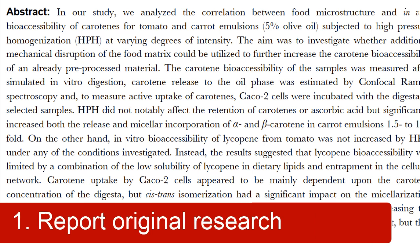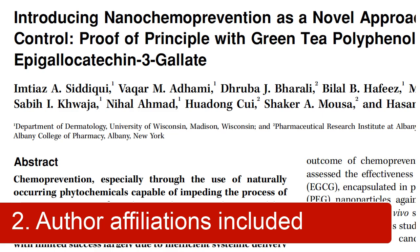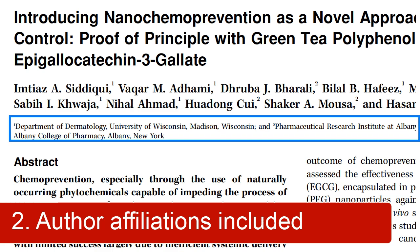A primary research article will report the results of original research conducted by the author or authors. The article will describe what the authors analyzed, measured, or investigated in their study. The authors' affiliations, such as the university or research institute that employs the authors, will be included.